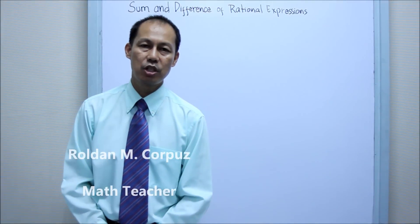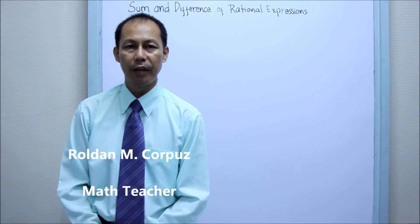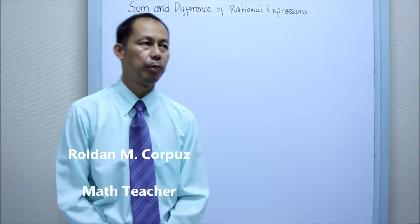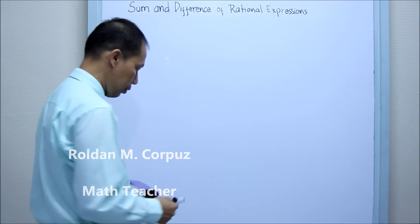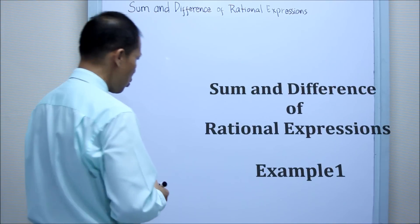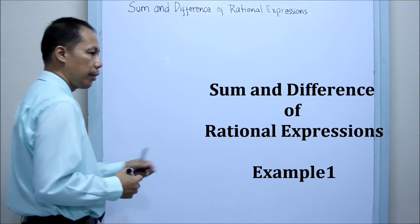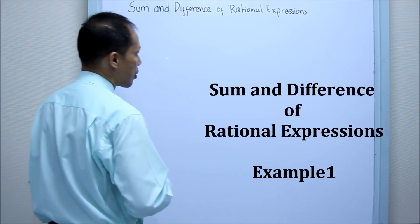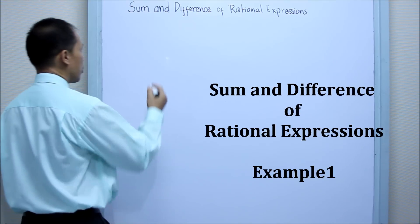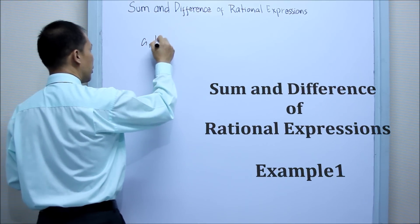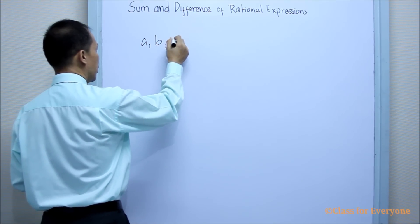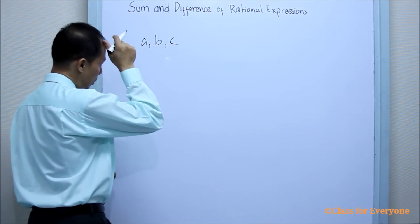Hi, welcome to Class 4, everyone. I'm Rodan and Corpus. Suppose we have three rational numbers, A, B, and C.